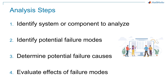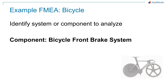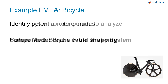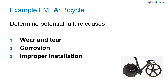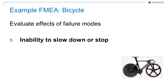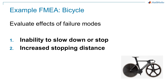Here is a simple example FMEA using an everyday mode of transportation — a bicycle. The system or component under analysis is the bicycle front brake system. The potential failure mode: the brake cable snapping. Potential failure causes include wear and tear, corrosion, improper installation, material defect, and more. The potential effects of the failure could include the inability to slow down or stop, increased stopping distance, the loss of rider balance, and more.